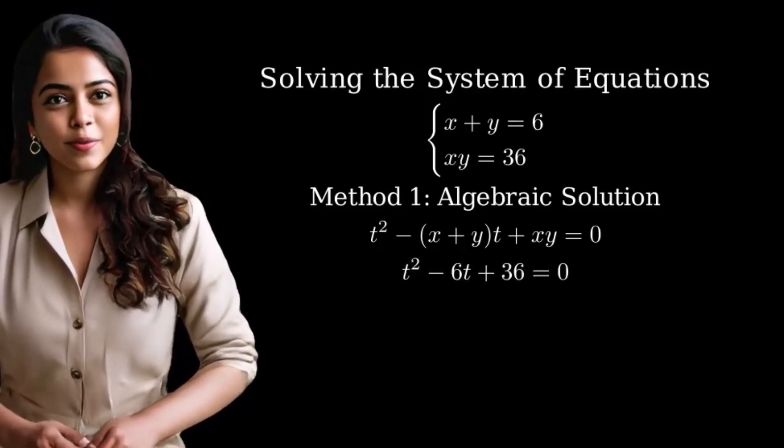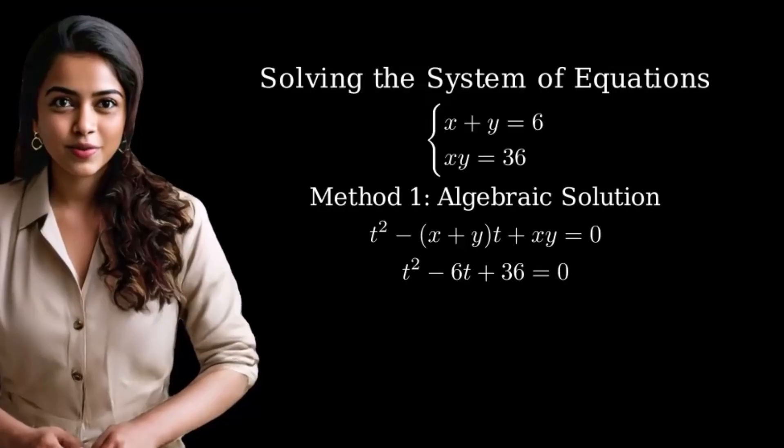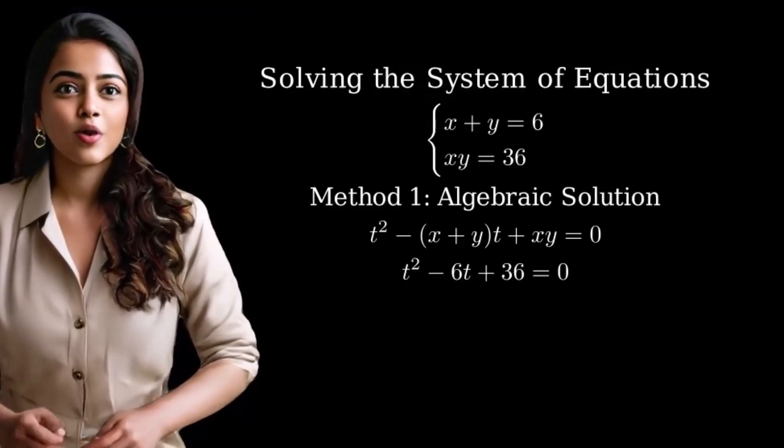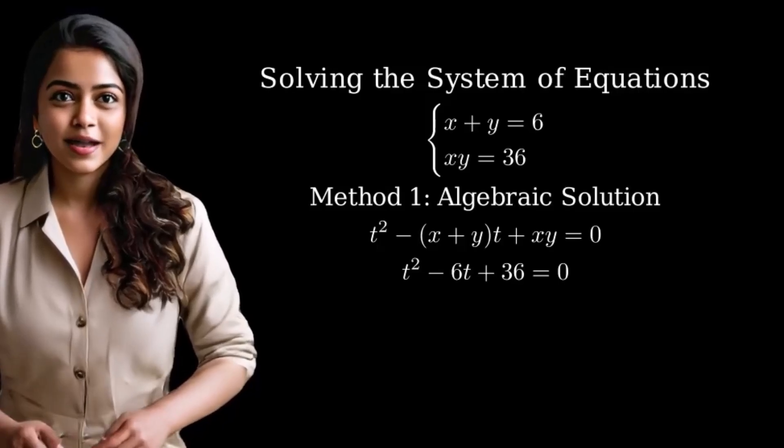Now we can substitute our known values. x plus y equals 6 and xy equals 36. This gives us t squared minus 6t plus 36 equals zero.